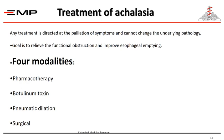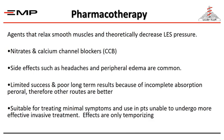For treatment of achalasia, we aim to relieve the functional obstruction and improve esophageal emptying. The treatment is palliation of symptoms — we cannot change the underlying pathology or reverse the degeneration of the Auerbach plexus, but we can improve symptoms. We have four treatment modalities: drugs, botulinum toxin, pneumatic dilatation, and surgery. Drugs are used for early or end-stage cases in patients unfit for surgery, such as nitrates and calcium channel blockers, aiming to relax the LES, though with side effects like headache and peripheral edema, and effects are not long-lasting.